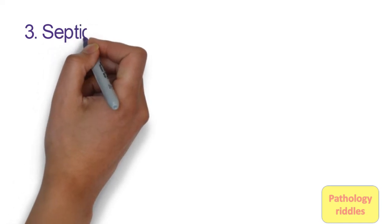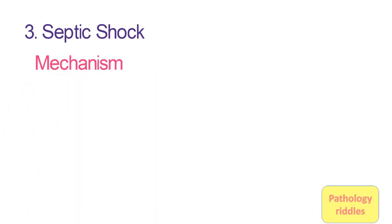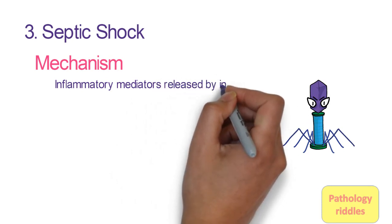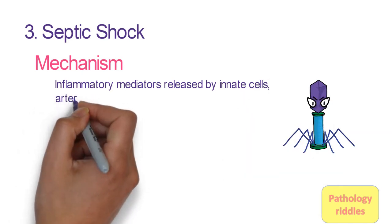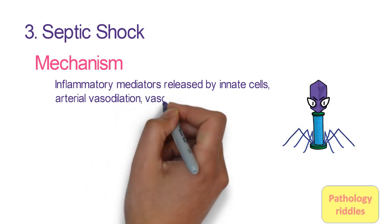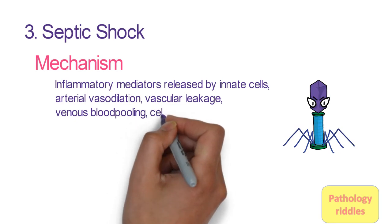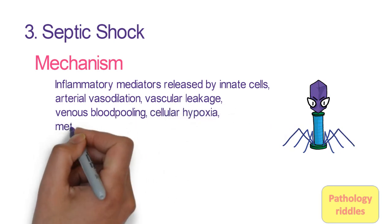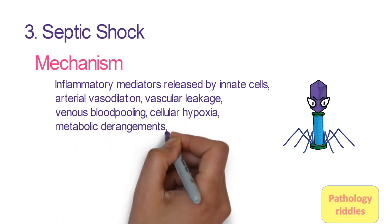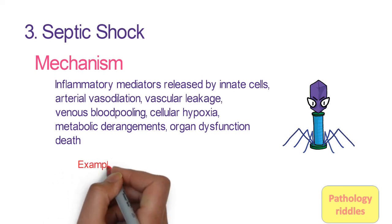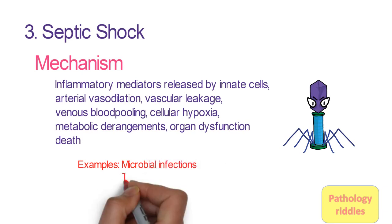The third type is shock associated with systemic inflammation — systemic means it's all throughout the body. It's also called septic shock. In this type, when microbes enter the vessels, there is release of inflammatory mediators by our innate immune cells, and that results in arterial vasodilation, vascular leakage, and venous blood pooling. There is decreased blood in the circulation, resulting in cellular hypoxia, metabolic derangements, and organ dysfunction. If the cause is not removed and is persistently present, it can lead to death. Conditions which can cause septic shock include microbial infections, trauma, and pancreatitis among others.